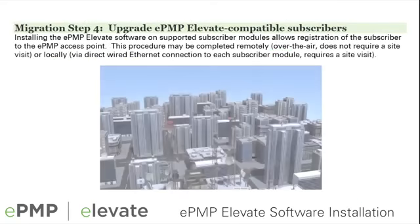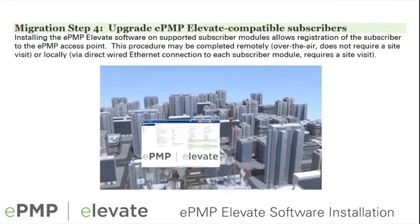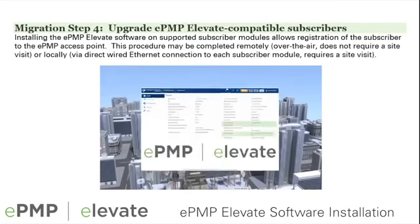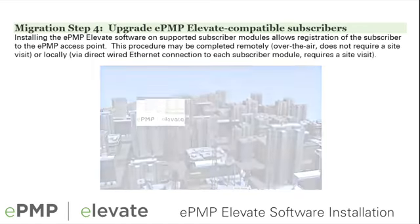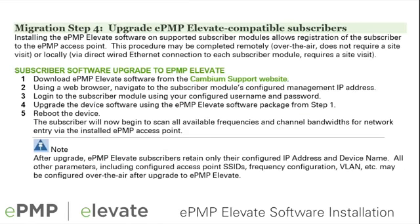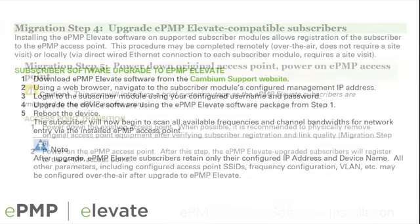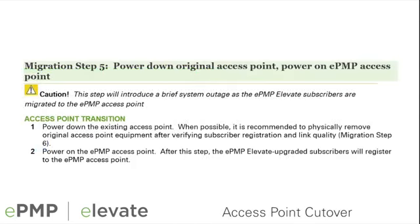Step four includes installation of the ePMP Elevate software onto compatible subscriber modules. Once a subscriber is upgraded, it will begin to scan for ePMP access points on all frequencies and channel sizes. Upgraded ePMP Elevate subscribers retain only their management IP address and device name. All other parameters may be configured over the air after the upgrade to ePMP Elevate.